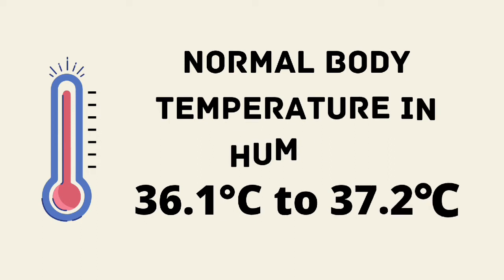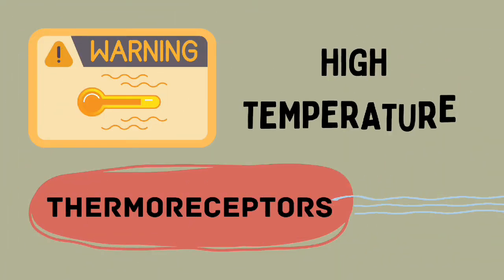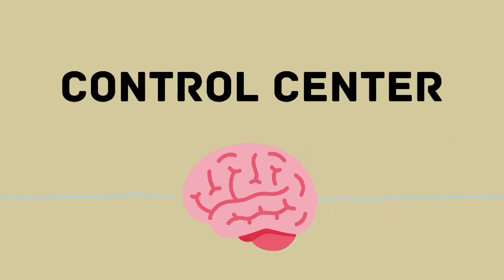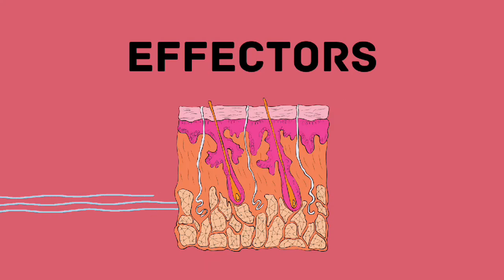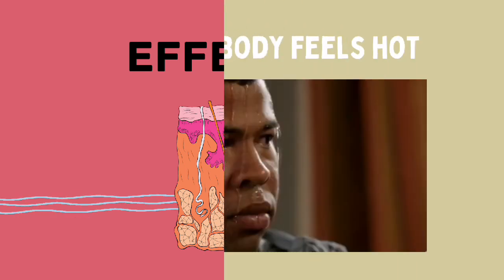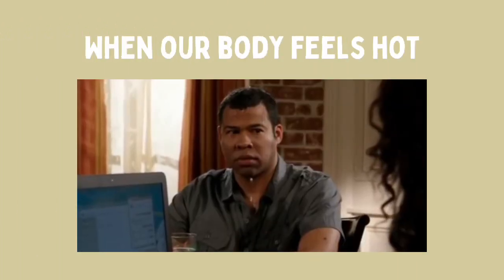Here's an example. The normal body temperature in humans ranges between 36.1 to 37.2 degrees Celsius. If thermoreceptors detect that the body is beyond the normal temperature, it sends signals to the control center. The control center then tells effectors what to do. Effectors do certain things in order to lower the body temperature — one of those things is to release sweat. And that is the reason why we sweat when we feel hot.